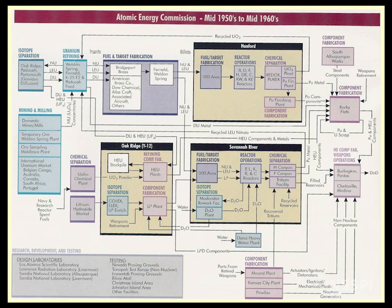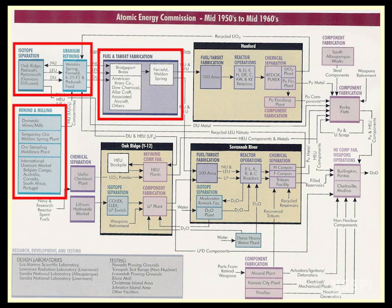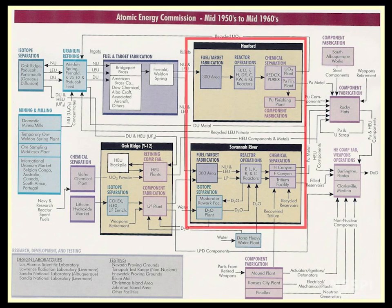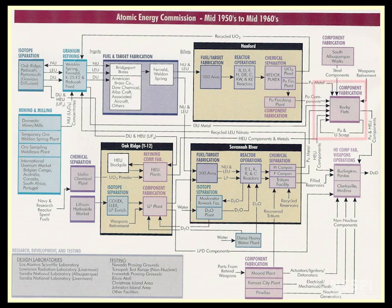This shows the more complicated cycle that we had in the United States from the 1950s to 1960s, where we still had a front end portion — mining and milling, fuel fabrication and enrichment, reactor irradiation — but now we had another set of reactors: the Hanford reactors in Washington State as well as the Savannah River reactors in South Carolina. Reprocessing operations occurred at both Hanford and at Savannah River, and plutonium metal processing and fabrication took place at Rocky Flats and other areas.